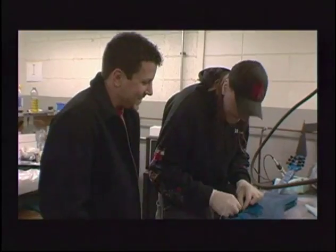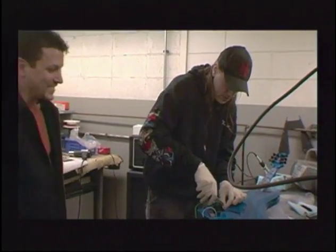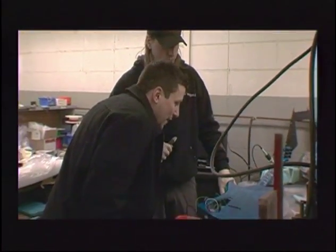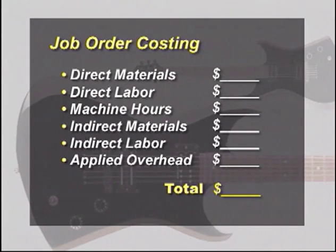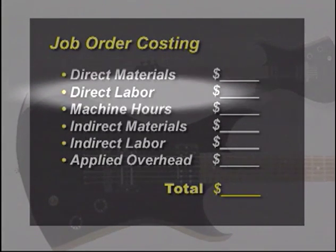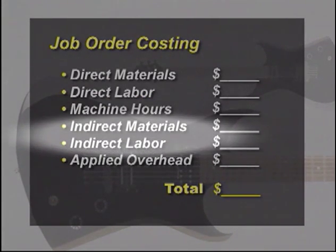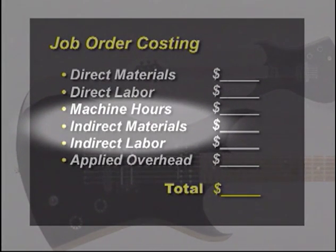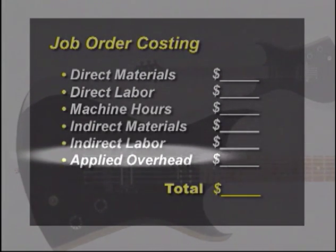These materials justify a higher price, and so does the additional hand-crafting and care that goes into the construction. When setting the price for the Maya signature model, Washburn managers needed a clear understanding of all the costs that go into each guitar. The main costs tracked for this type of project are associated with direct materials and direct labor. In many cases there are also indirect materials, indirect labor costs, and machine hours to include, and then a certain percentage of overhead is applied to the total.